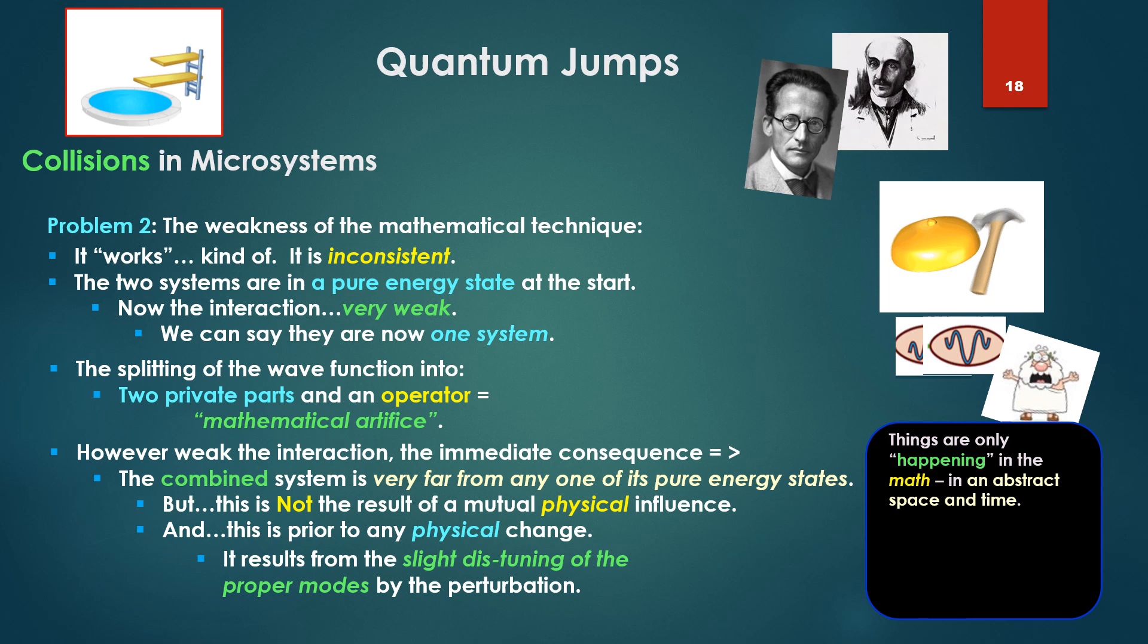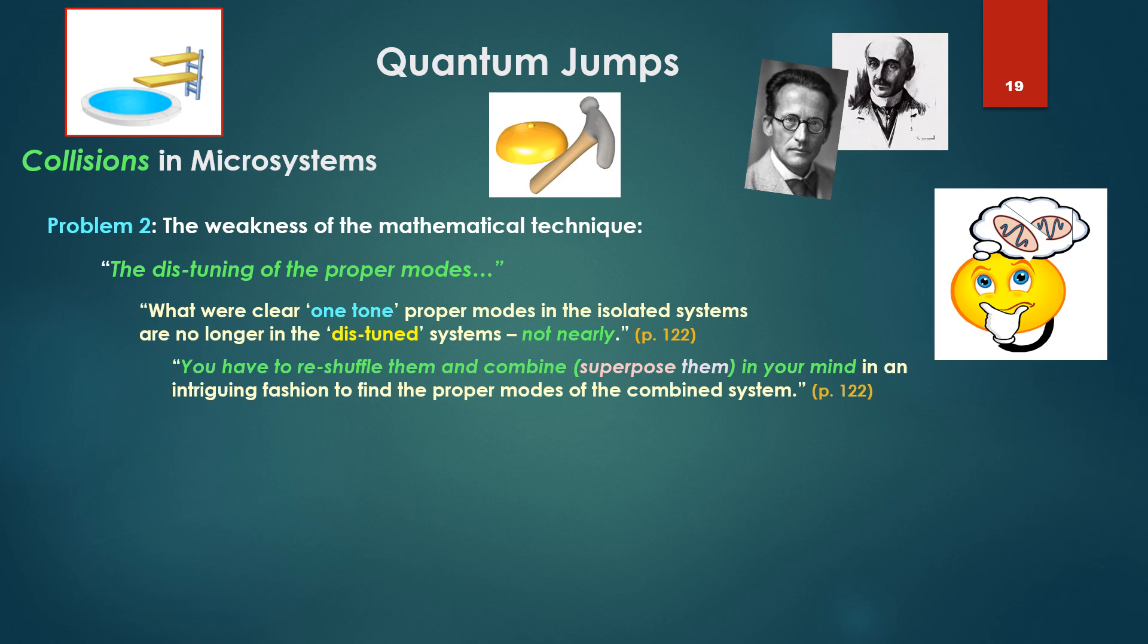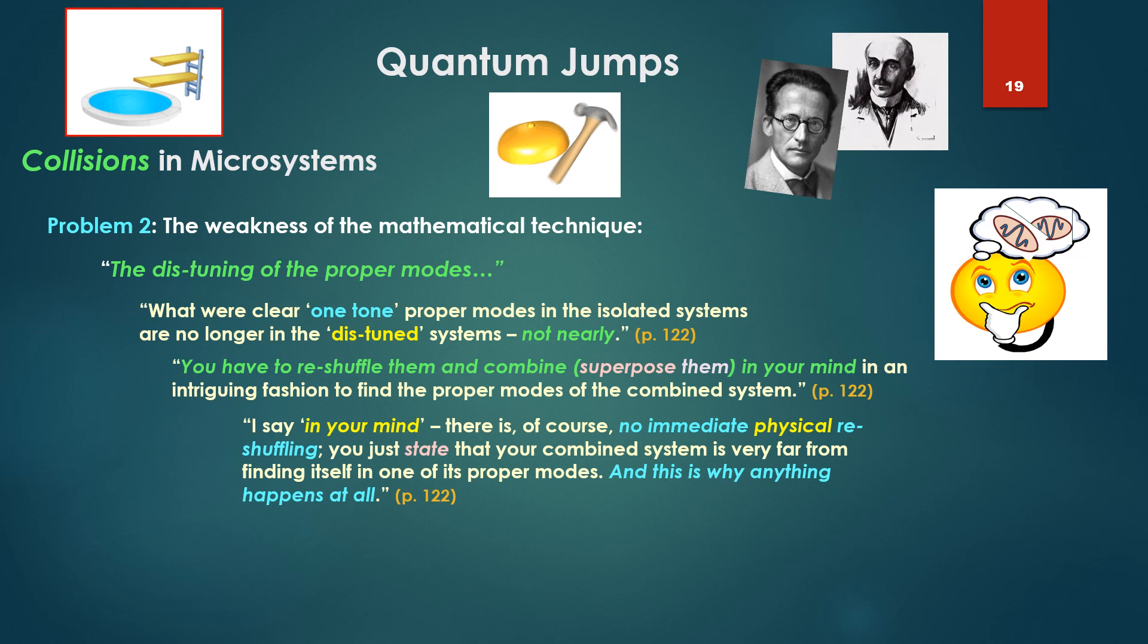But where is this happening? Things are happening in the math, in an abstract space and time. That's what he's implying. There's no real concrete physical development, alteration of these modes. The concrete alteration of modes is taking place or being described. No real concrete physical development is being described. What were clear, one-tone proper modes in the isolated systems are no longer in the detuned systems, not nearly. You have to reshuffle them and combine them, or superpose them, in your mind, in an intriguing fashion. Notice, in the mind, to find the proper modes of the combined system. I say, in your mind, there is, of course, no immediate physical reshuffling. You just state that your combined system is very far from finding itself in one of its proper modes. And this is why anything happens at all.